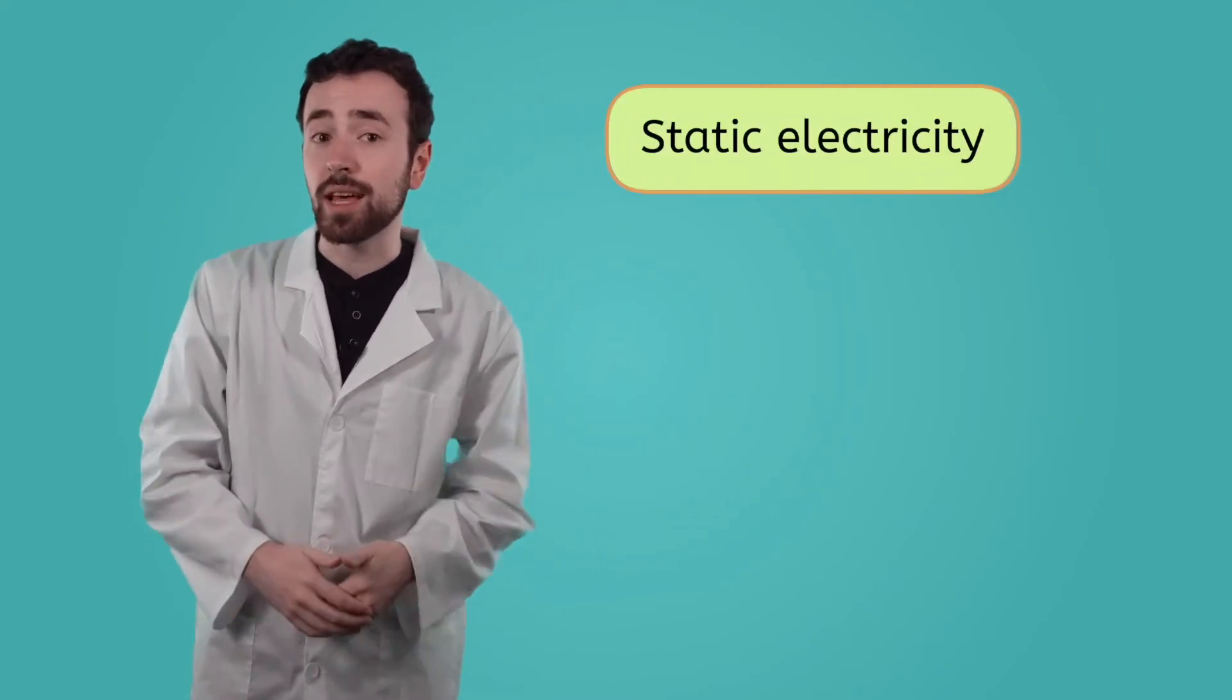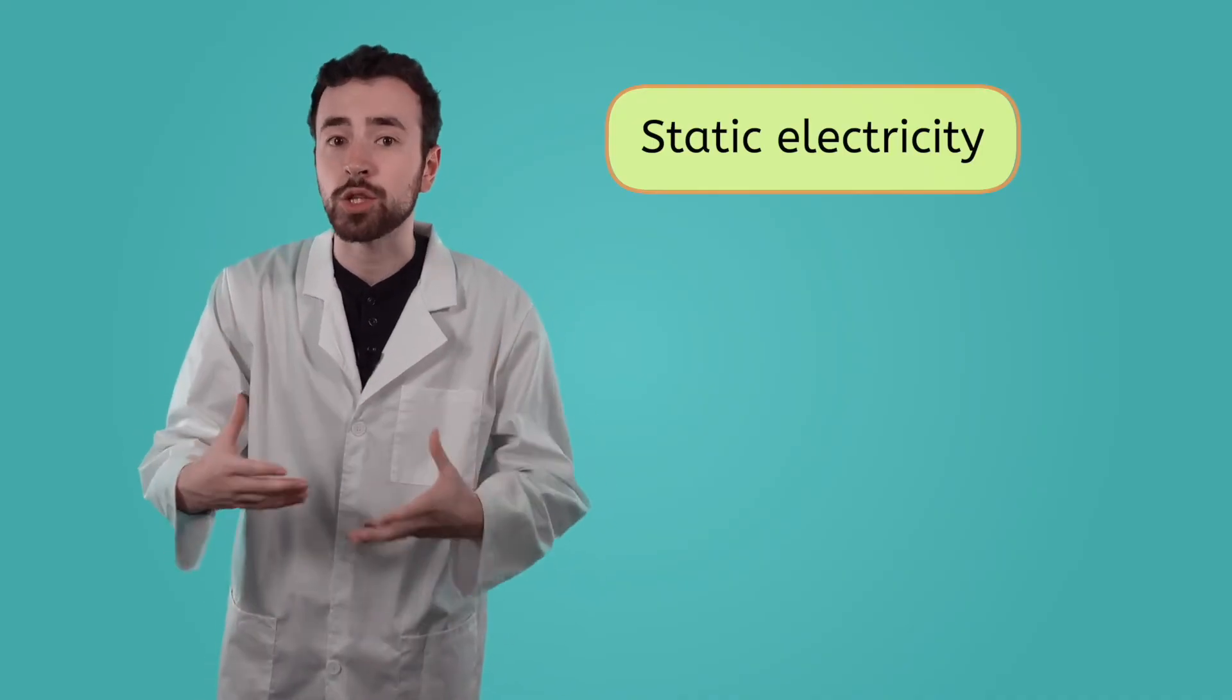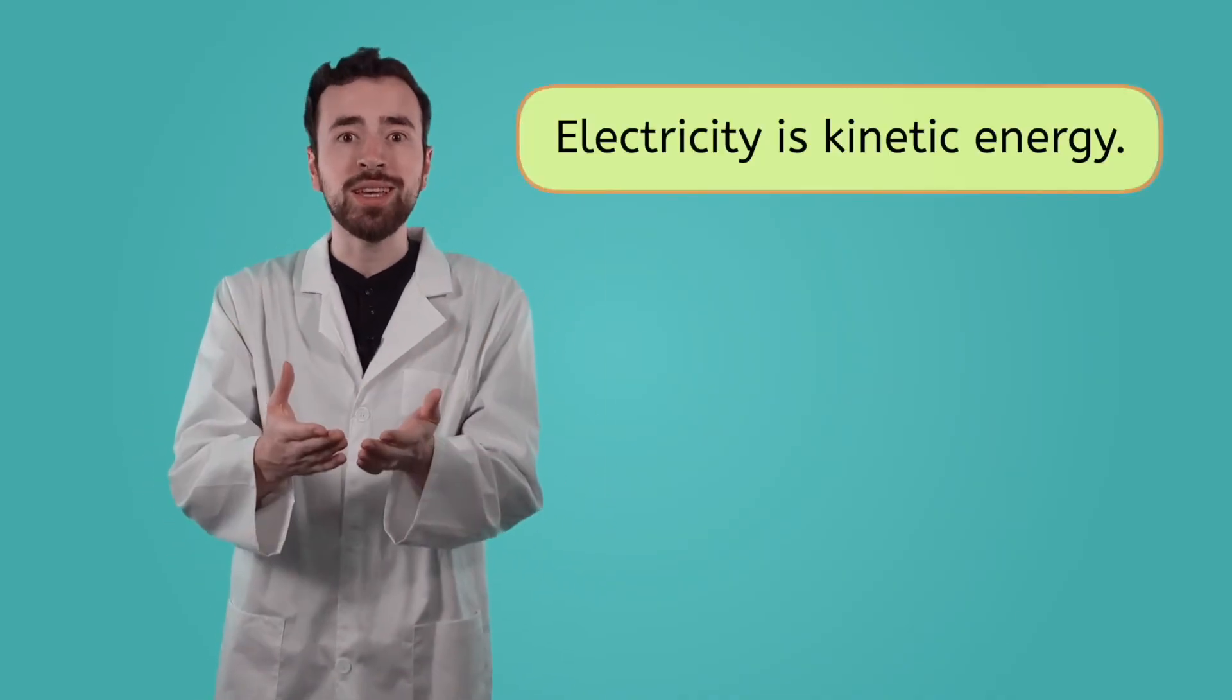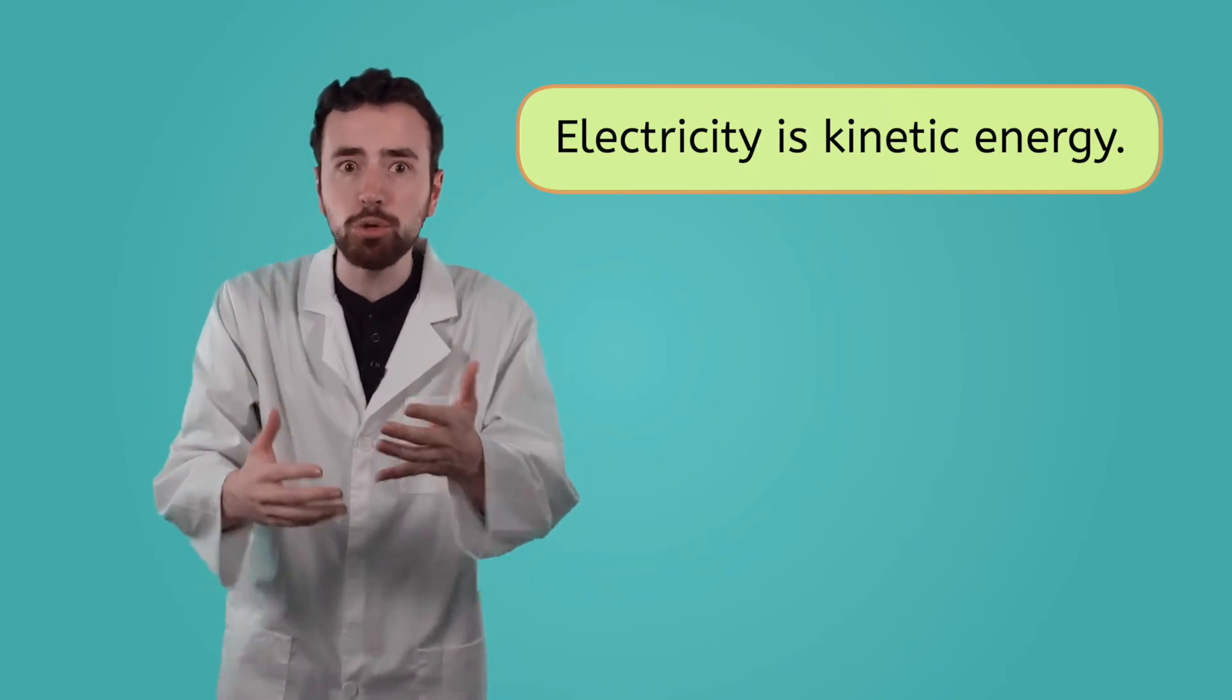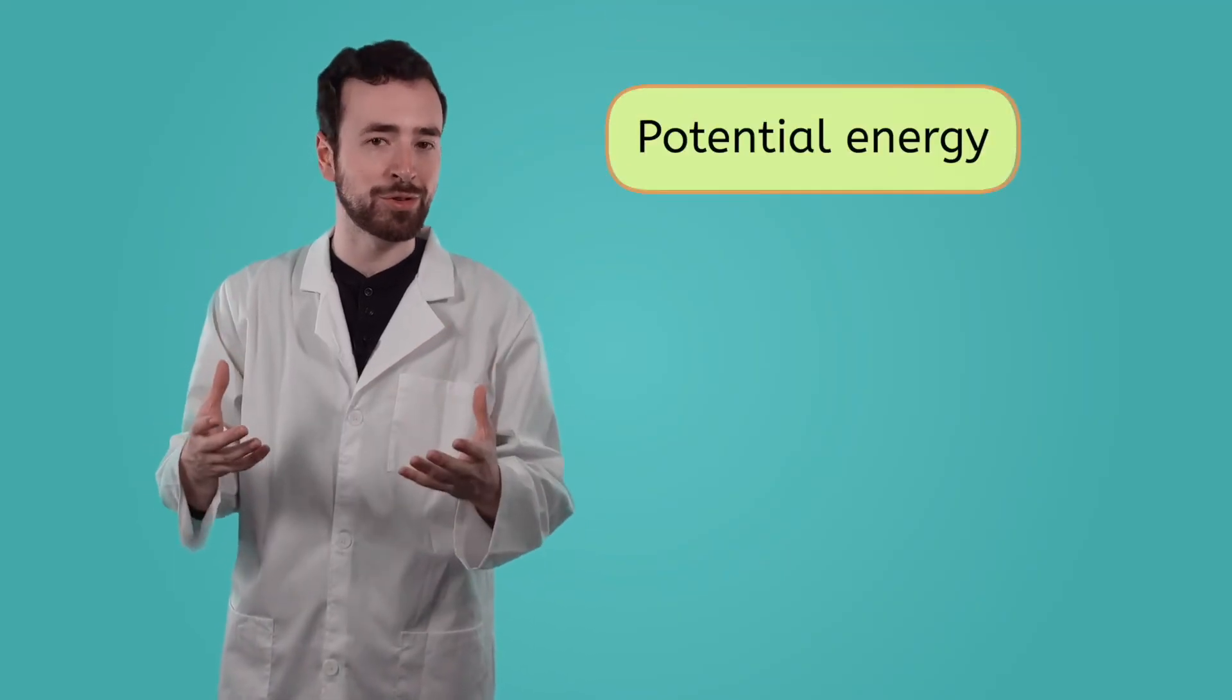We know that the electricity that powers our homes comes from a flow of electric charge. That energy is kinetic. The charges are in motion, moving between atoms. However, sometimes that electric charge doesn't move from atom to atom. Instead, it stays in one place, building up more and more potential energy.